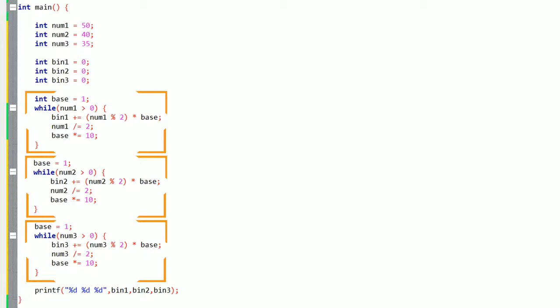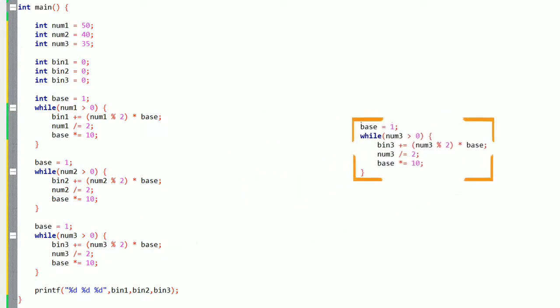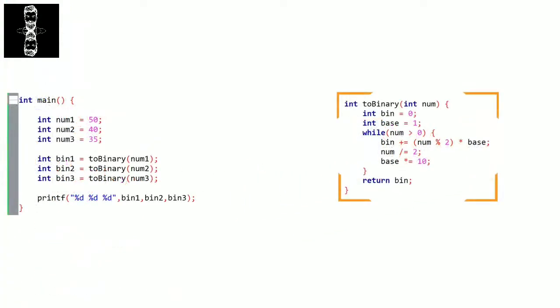It's called a function. A function is just a block of instructions that performs a task when you call it. To take our last example, we can have a function that converts a number from decimal to binary, and we would call it in our program each time we want to do that conversion. For example, here we called the function three times.